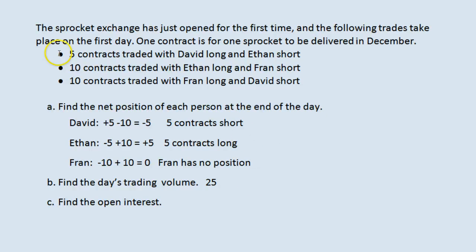For example, when we say five contracts are traded with David Long and Ethan Short, that is five contracts traded, not ten. This is ten and not twenty, and so on. So twenty-five contracts have been traded.